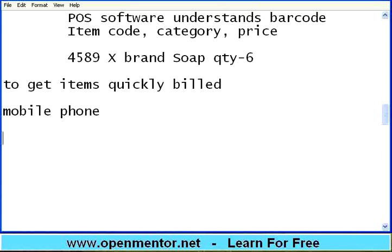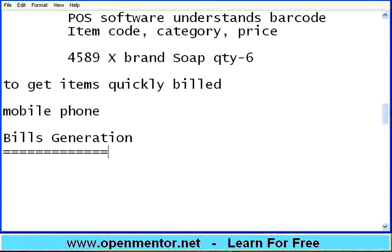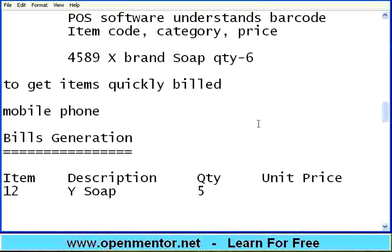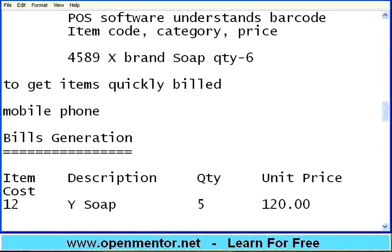The third area we should see is the bills — bill generation. As you know, typically bills have item, then description, then quantity. For example, item 12, description Y soap, quantity 5. Then it will also have unit price — about 120 rupees or something like that. Then the total cost.